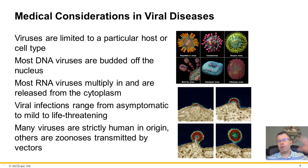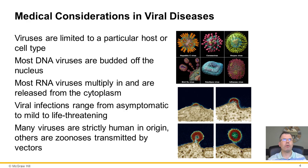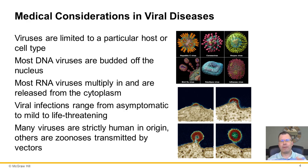Viruses can only affect cells that have the right receptors — their spikes are specific to the type of receptor they bind. That spike could be a master key affecting every cell, or very specific to only one cell type. DNA viruses tend to go to the nucleus, where the machinery for DNA replication is, while RNA viruses stay in the cytoplasm.